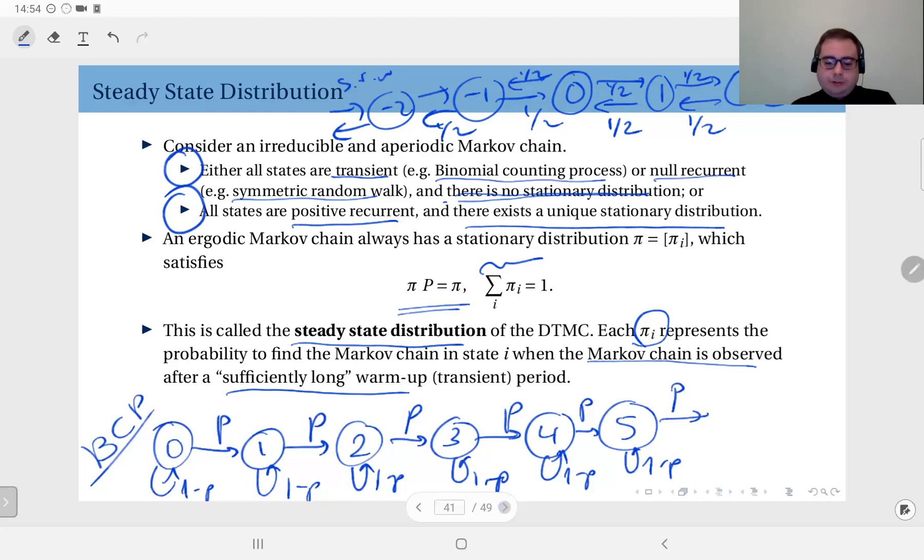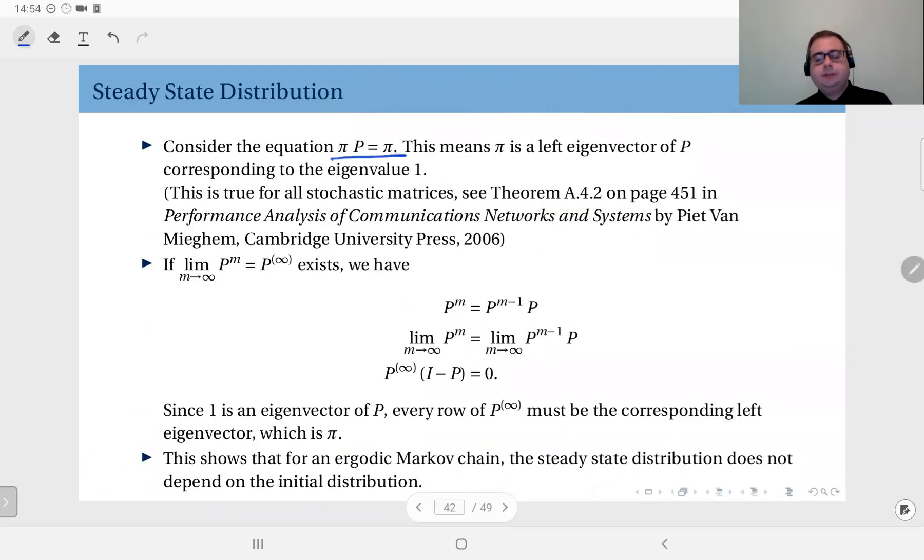Now consider this equation. As we have seen, this is the equation that the steady state distribution satisfies. But if you remember your linear algebra course, this equality shows us that π is a left eigenvector of the matrix P corresponding to the eigenvalue 1.